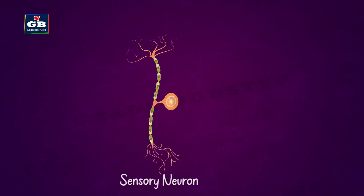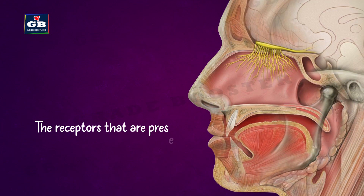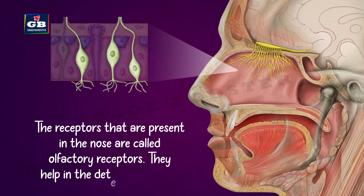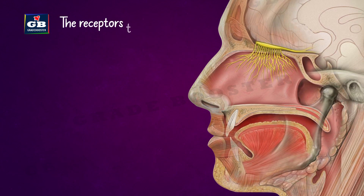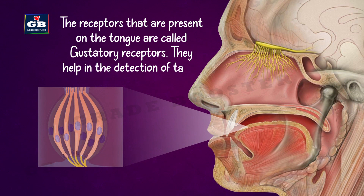The neurons present in the sense organs have specialized tips called receptors. These receptors detect the stimuli and convert them into electrical impulses. The receptors in the nose are called olfactory receptors and they detect smell. The receptors in the tongue that help detect taste are called gustatory receptors.